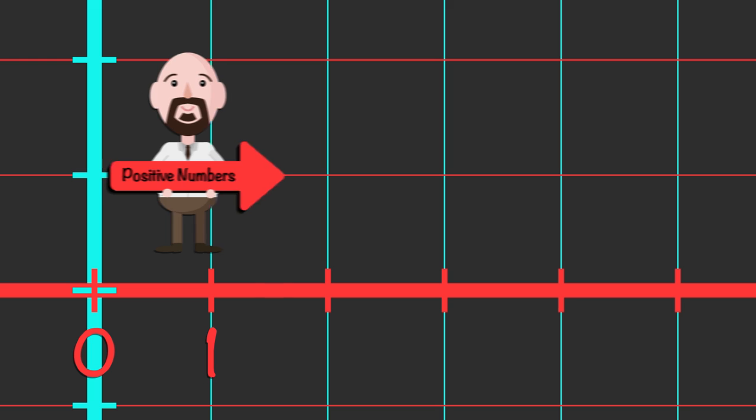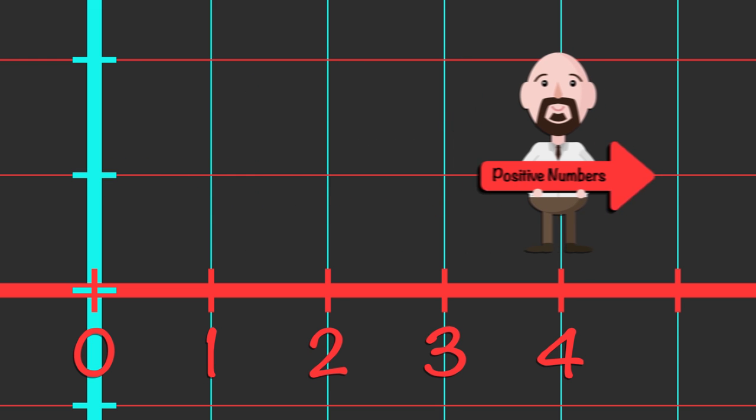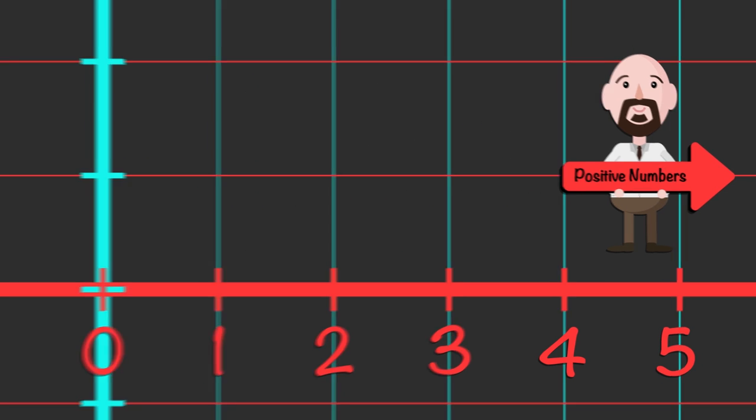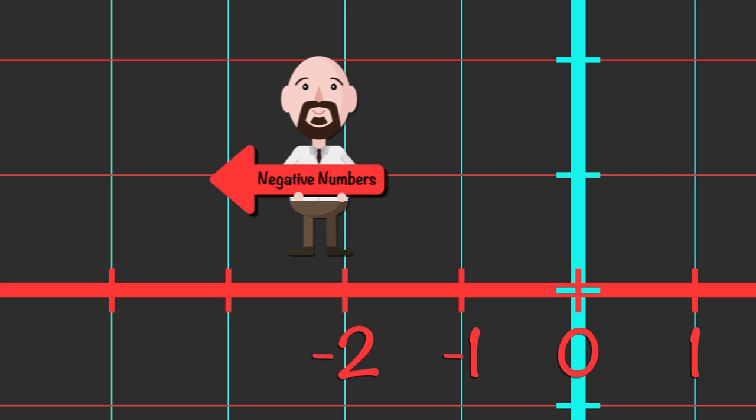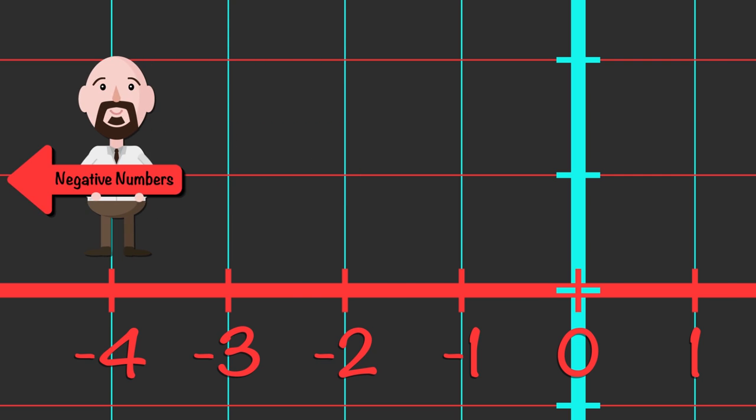One more thing I should have pointed out. Just like on the number line, we can go forward. We also can go backward. On the x-axis, positive numbers are on the right and get bigger the further we go on. And we know on the other side of zero, the numbers change. These are called negative numbers: negative one, negative two, and so on.